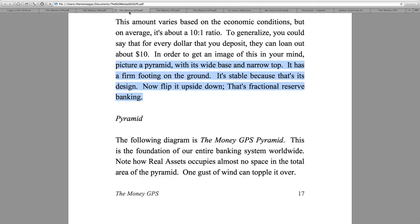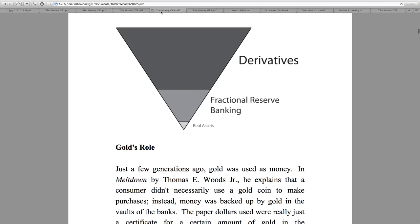Can you believe that they've actually taken a solid foundational system and flipped it on its head? Now, looking at the Money GPS pyramid: at the very bottom we have real assets — the very smallest part. Above that, the monster: fractional reserve banking. And on top of that, derivatives, which is astronomical — I won't get into that here as I've covered it in another video. Essentially, fractional reserve banking multiplies the amount of money in circulation, all because of the money we put in. We are actually fueling this entire system.